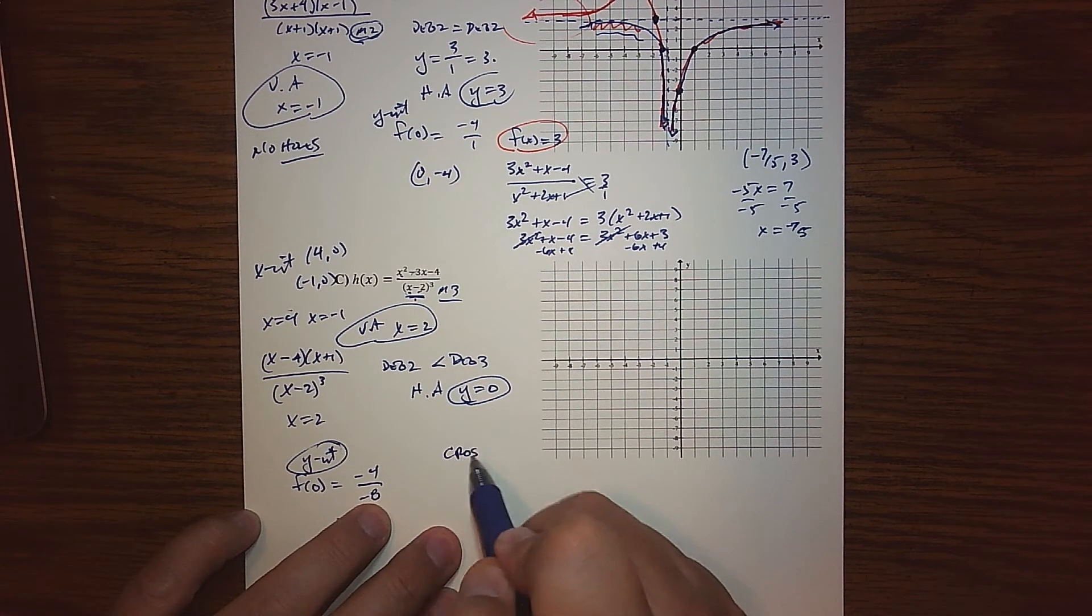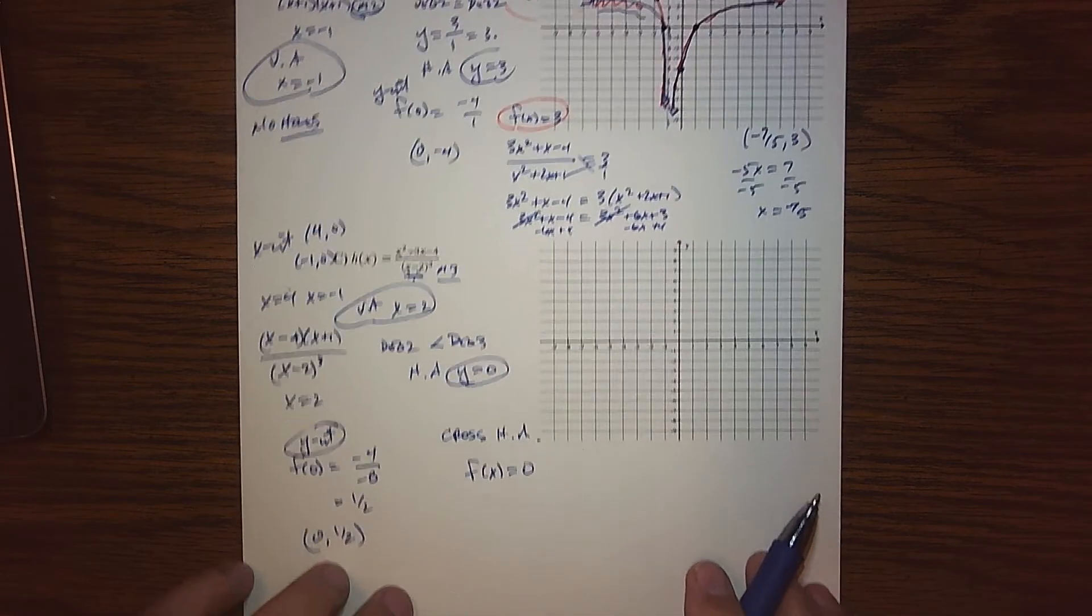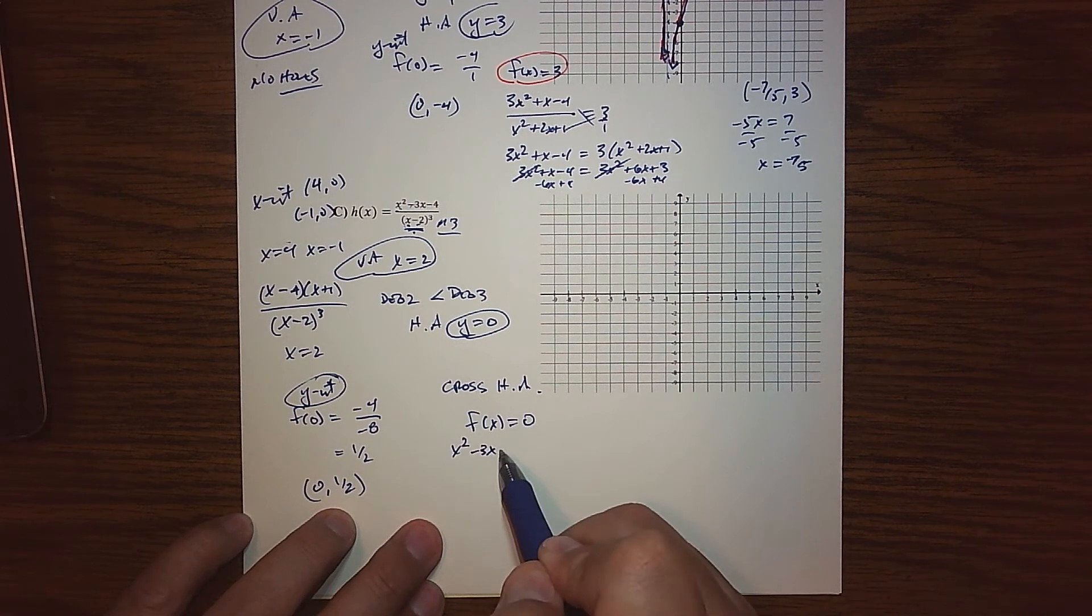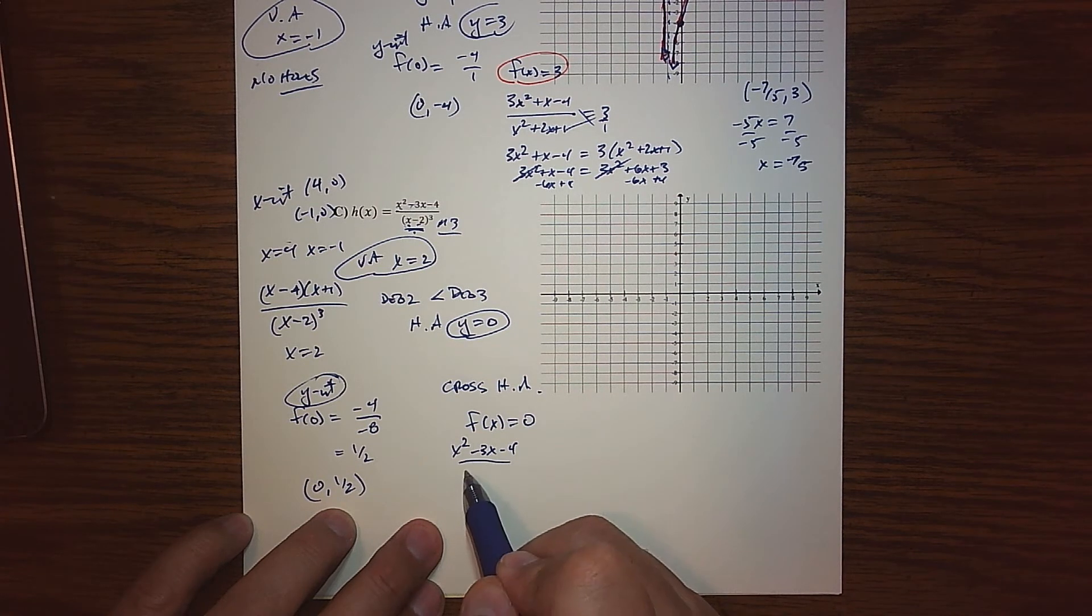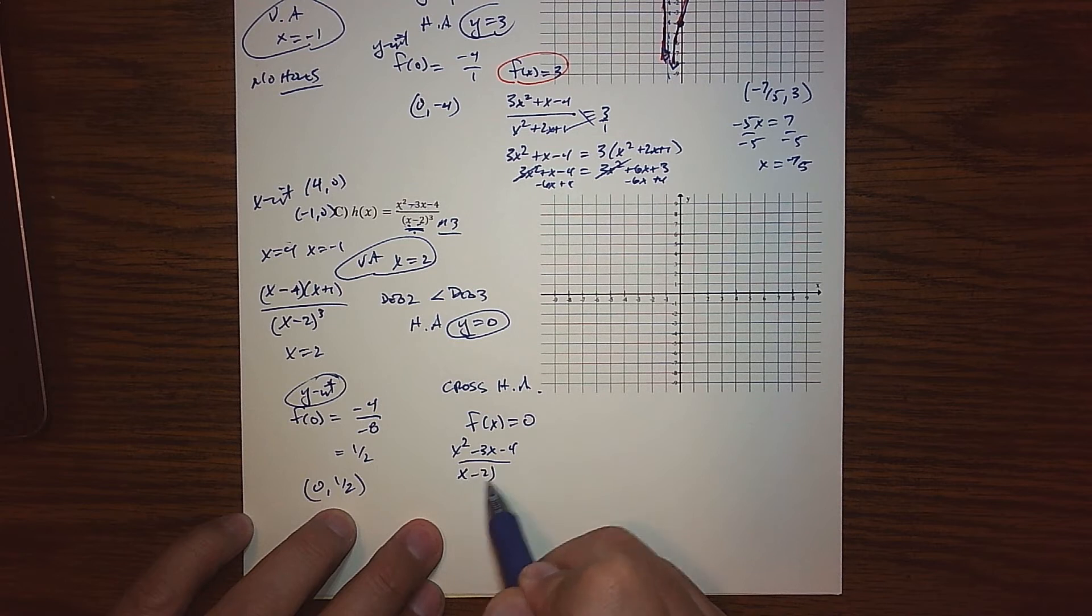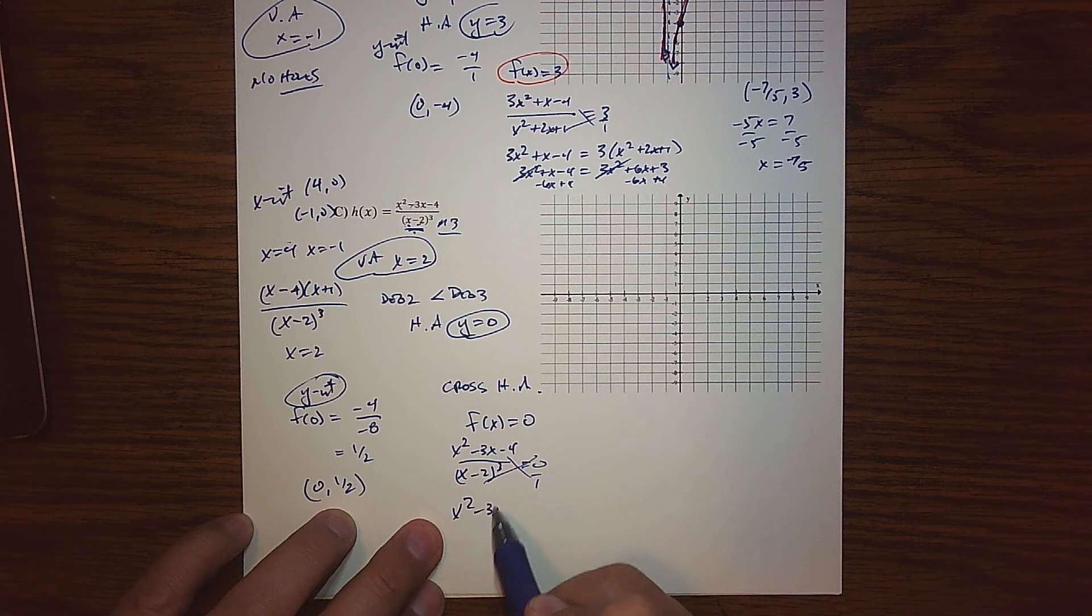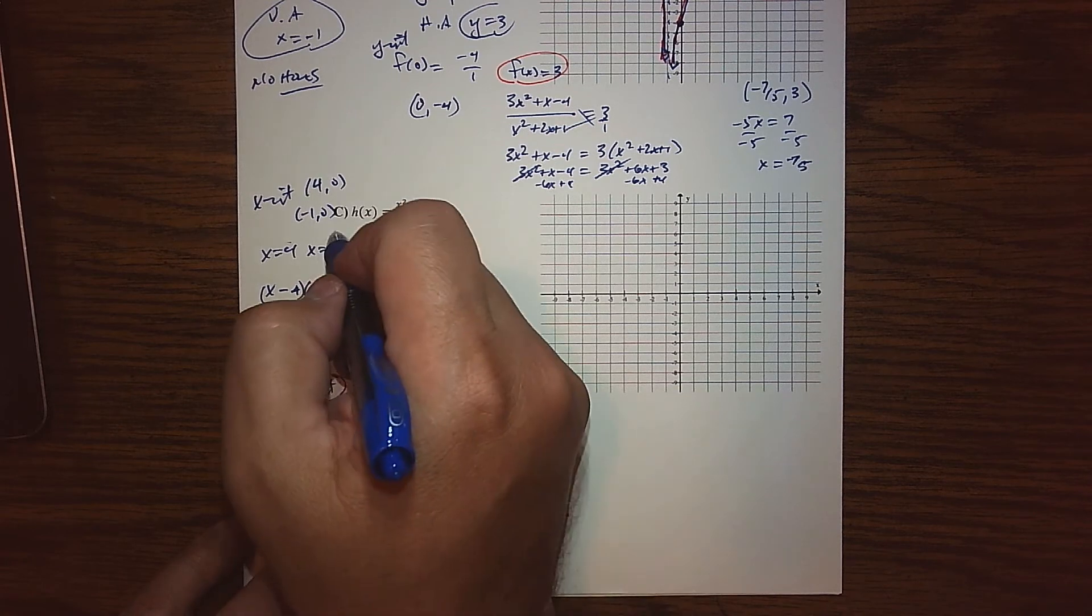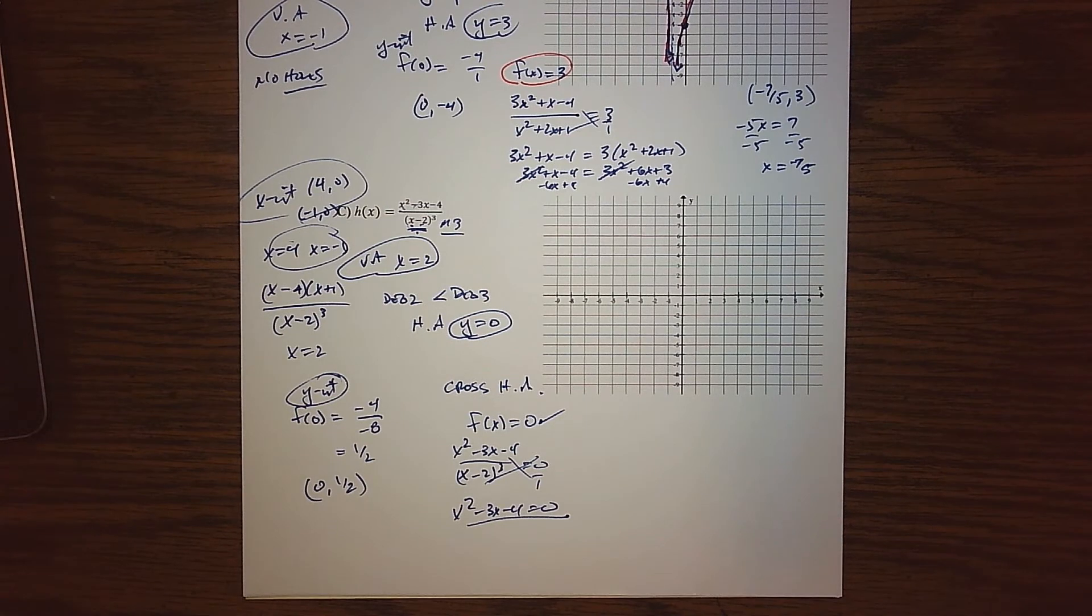So in this case, my y-intercept, we're going to plug zero in there. Again, if we plug zero in here, this all goes away and we're left with negative 4. If we plug zero in here, we have negative 2 cubed, which is negative 8, so we get a half. So we are crossing the y-axis at 0 and a half. What about a crossing of the horizontal asymptote? Well, that's asking when does f of x equal to 0? So when does x squared minus 3x minus 4, all over x minus 2 cubed, equal to 0?